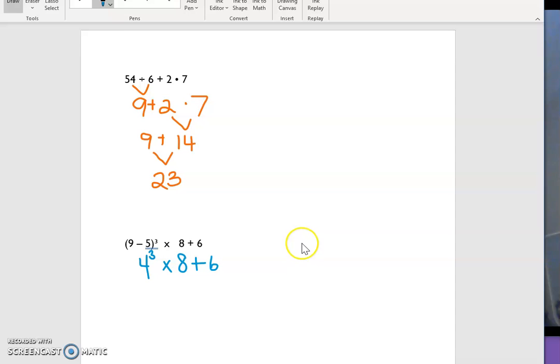To evaluate this exponent, I'm going to use my side space. And I'm going to do 4 to the third power, which is 4 times 4 times 4. 4 times 4 would be 16, and then 16 times 4 would be 64.